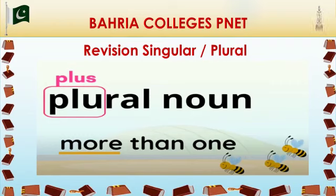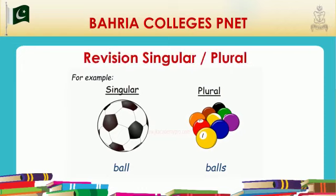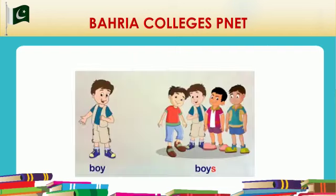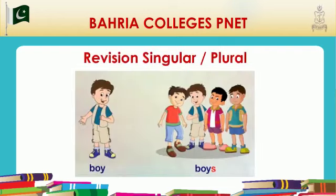When we talk about more than one person, place, animal or thing, we use the plural form of the naming word. We usually add S to the word to get its plural. Now you can see we added S to the word to make its plural. See more examples.